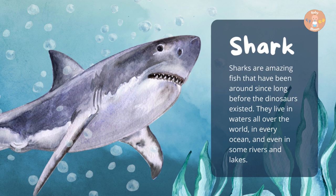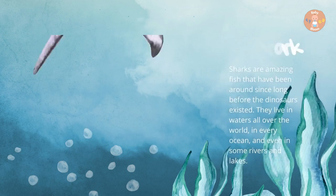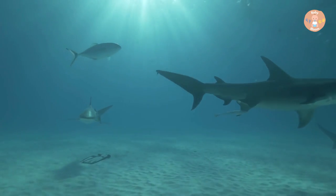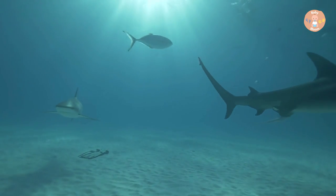Sharks. Sharks are amazing fish that have been around since long before the dinosaurs existed. They live in waters all over the world, in every ocean, and even in some rivers and lakes.